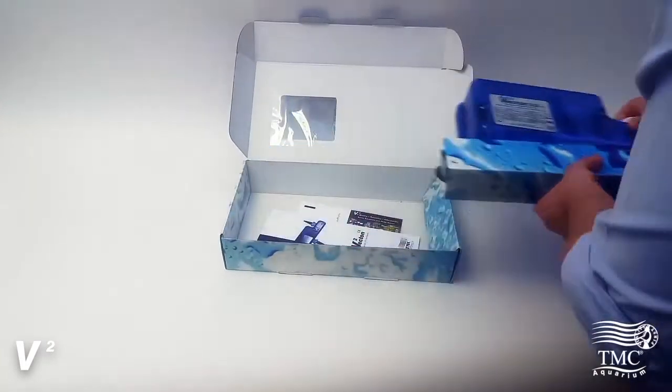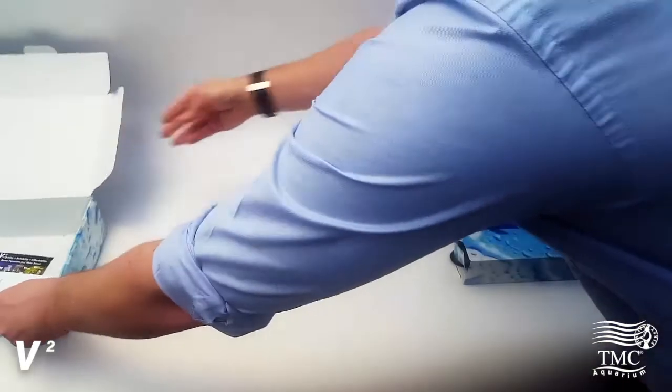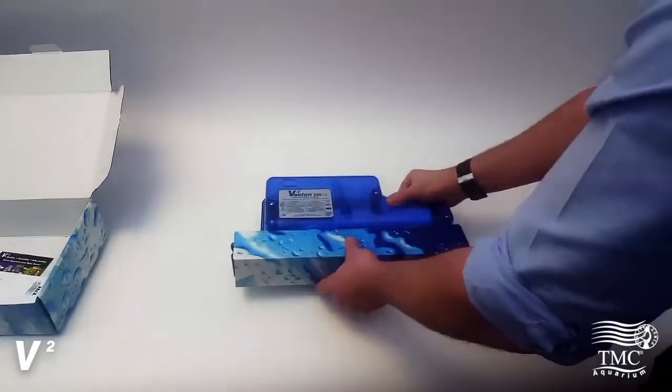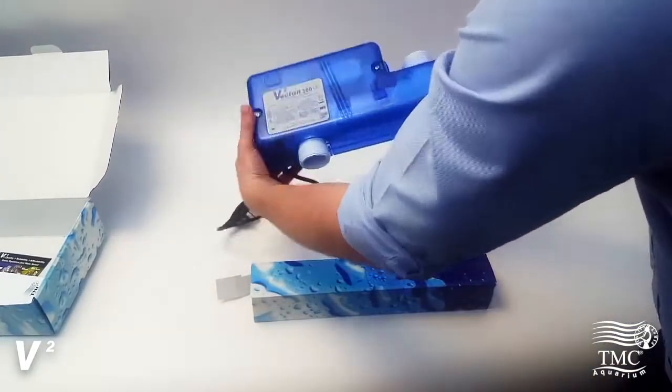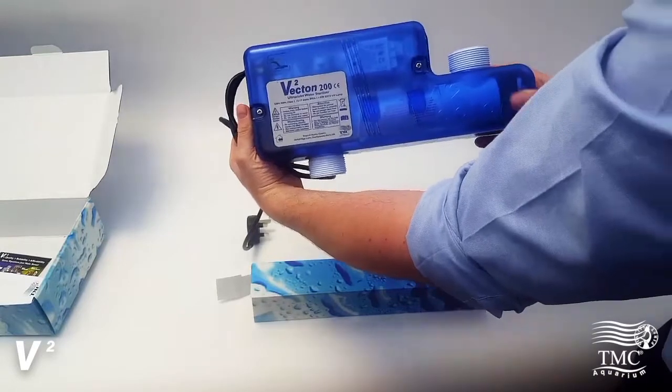A UV sterilizer will damage and destroy disease-causing organisms such as bacteria from your aquarium. This will protect your fish and corals. The UV will also destroy nuisance algae from the water column, which is essential in a hard-to-treat reef tank.